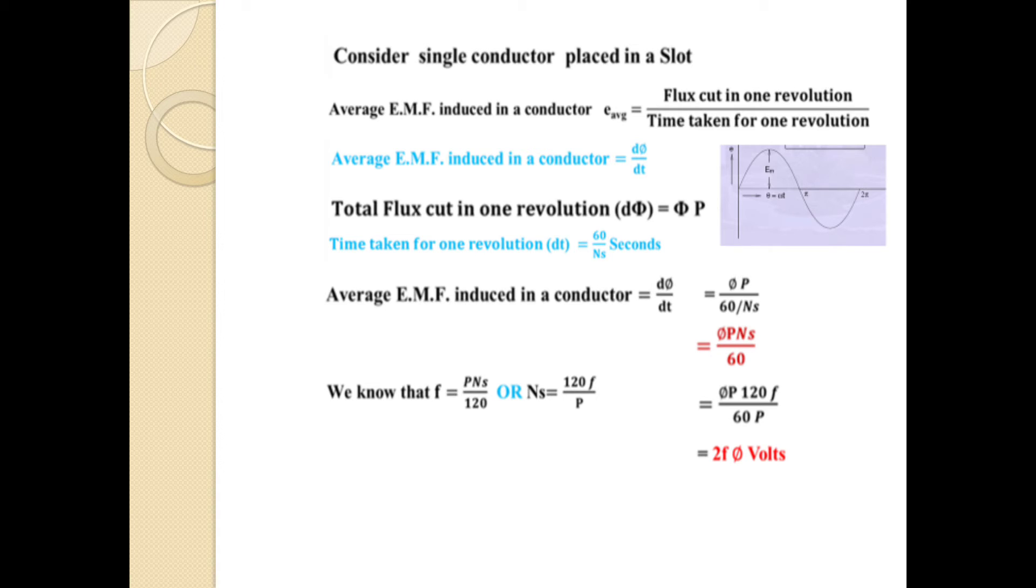Consider a single conductor placed in a slot. The average EMF equation is average equals flux cut in one revolution divided by time taken for one revolution. Average EMF induced in a conductor is Φ divided by T. We know that total flux is Φ into P. Time taken for one revolution is 60 divided by Ns seconds.